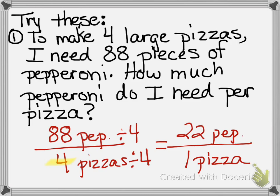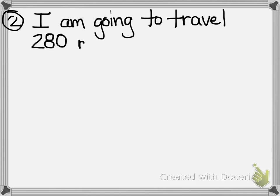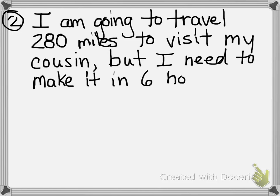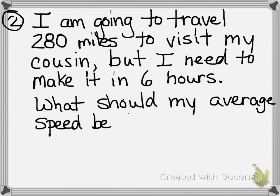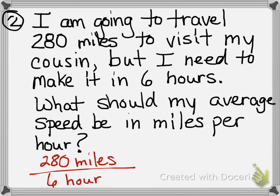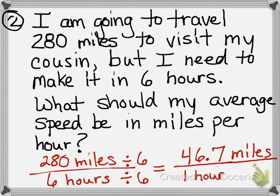Let's try one more example. I'm going to travel 280 miles to visit my cousin this Christmas, but I need to make it there in six hours. What should my average speed be in miles per hour? Set up 280 miles over six hours, then divide top and bottom by six. That gives me about 46.7 miles per one hour, so my average rate of speed would need to be about 47 miles per hour.